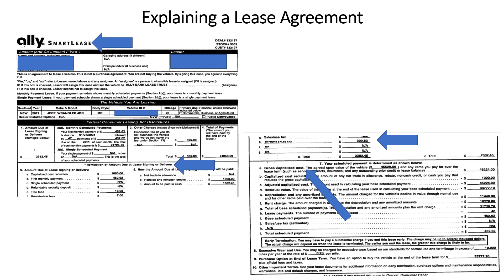Then you have an itemization of the amount due at lease signing. This would be any capitalized cost reduction, such as trade credits or cash down, what your monthly payment will be, and any other fees being paid up front at time of application. A lot of times your title fees and your excise tax are included. This line shows that up-front sales tax is being paid, not included in the lease payments.